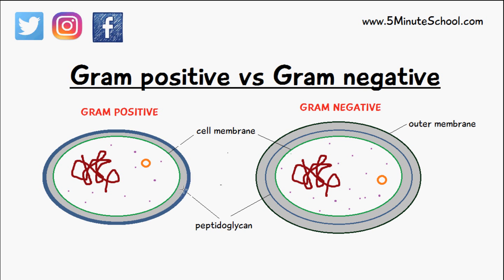Now look at the outer surfaces — this is where we have the key differences between both types of bacteria. Gram positive bacteria just have a cell membrane and a cell wall which is made from peptidoglycan, and then they have a periplasmic space which just separates the two. Peptidoglycan is what the cell wall is made from — it's a combination of sugar and amino acids and it forms a meshwork.